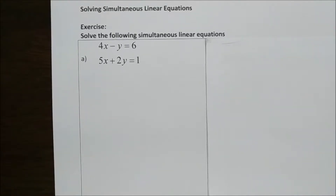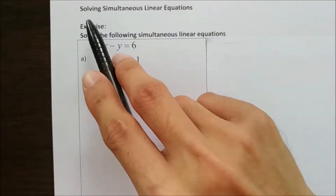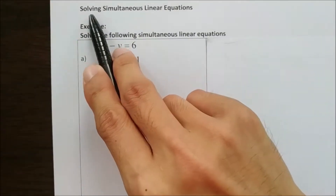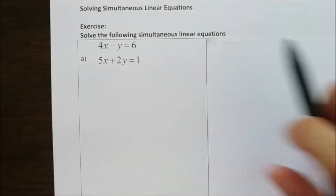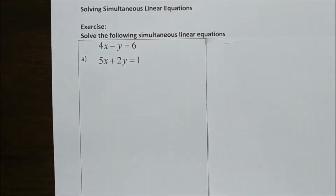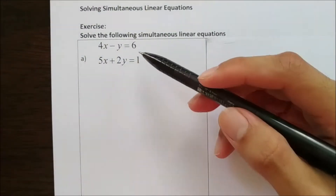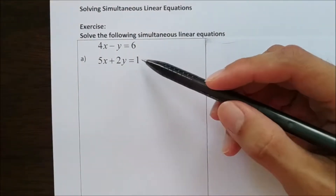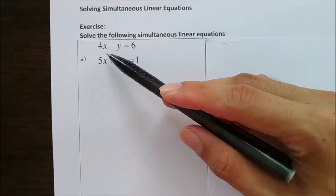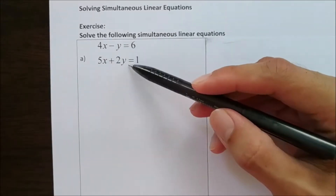Hello everyone, today we are going to look at Form 1 Mathematics, Chapter 6, Linear Equations. This is the part where we need to solve the simultaneous linear equations. Simultaneous linear equations means that we have two linear equations of the same unknowns.